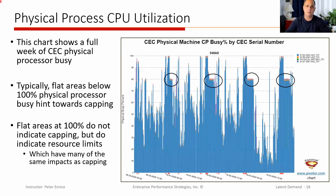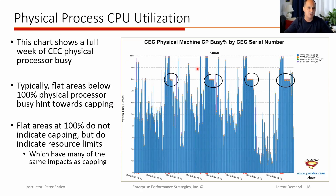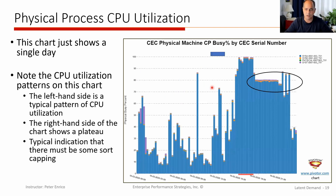I'm showing you one particular example here — I think this is like a week's worth of data. You see the utilization, you see there's white space meaning the machine is not busy at these times. But naturally at certain points you see periods where the machine is actually reaching 100% utilization. And there are other times where you see this sort of flatlining occurring. I'm going to go to the next slide, which is just zeroing in on this.